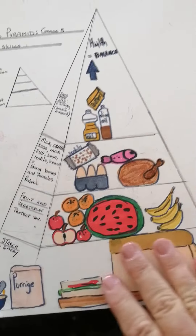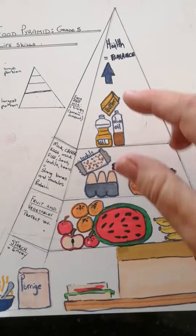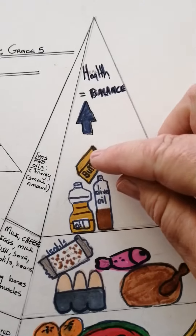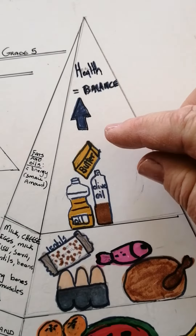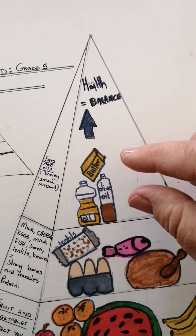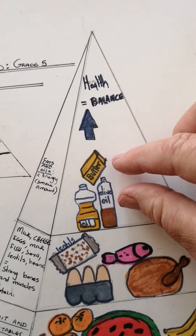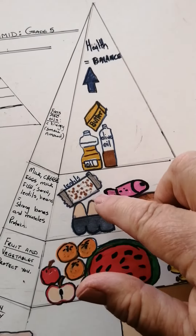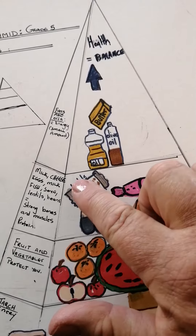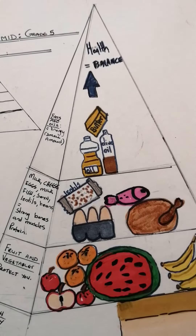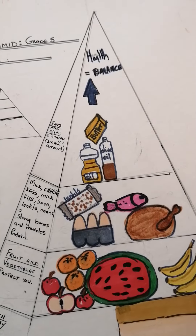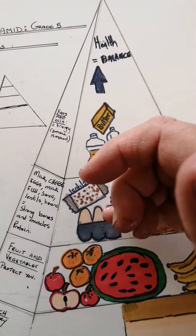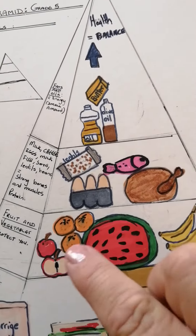The smaller portion of what you eat each day is your fats and oils, which is right on top and it's the smallest portion you would eat to make up your day's food. Then below that is your protein, which is your milk and eggs and fish, lentils, chicken.